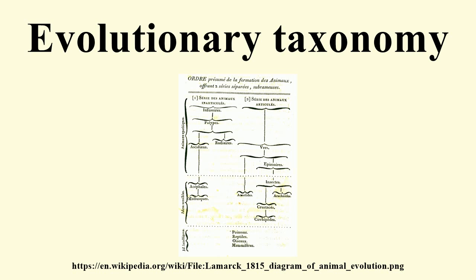Transmutation of species entered wider scientific circles with Erasmus Darwin's 1796 Zoonomia and Jean-Baptiste Lamarck's 1809 Philosophie Zoologique. The idea was popularized in the English-speaking world by the speculative but widely read Vestiges of the Natural History of Creation, published anonymously by Robert Chambers in 1844. Following the appearance of On the Origin of Species, tree-of-life representations became popular in scientific works.